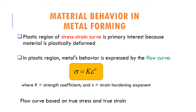In the plastic region, metal behavior is expressed through the flow curve, which is given through the equation sigma equals k epsilon to the power n. Here, k is the strength coefficient and n is the strain hardening exponent. The flow curve is based on true stress and true strain.